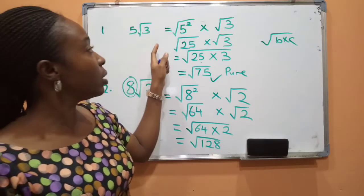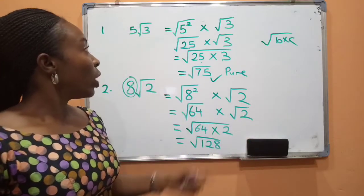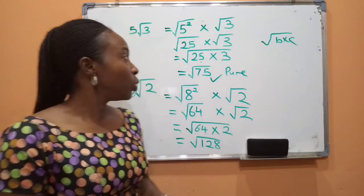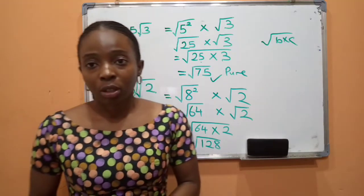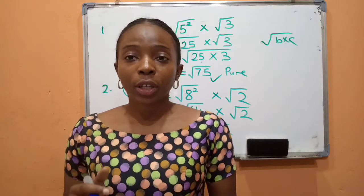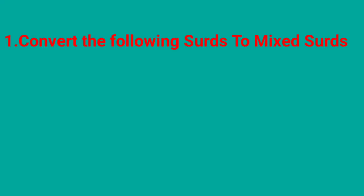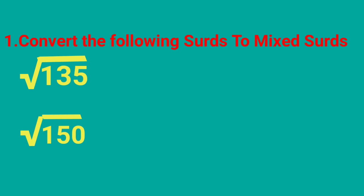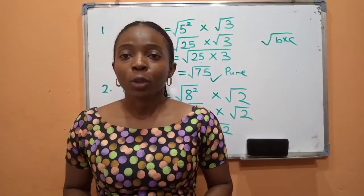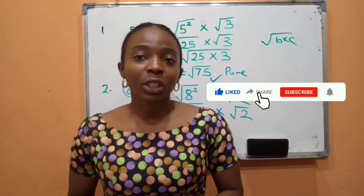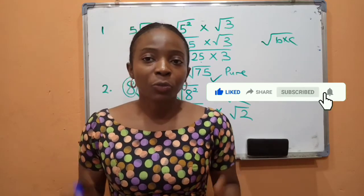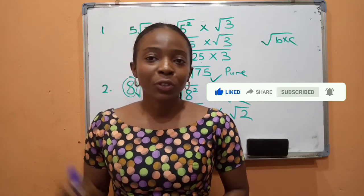It's absolutely easy, guys. So we have succeeded in converting pure salts to mixed salts, and in this example we succeeded in converting mixed salts back to pure salts. Here's a quick exercise I would like you to try out — leave your answers in the comments section and I'll be responding to them. Convert the following salts to mixed salts: the first one is root 135 and the second is root 150. So that is it for today. If you got value from this video, hit that like button, subscribe, turn on the notification bell, share with friends and loved ones. And don't forget — maths can be easy. See you in the next class. Thanks for watching.